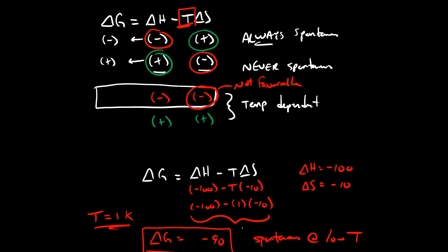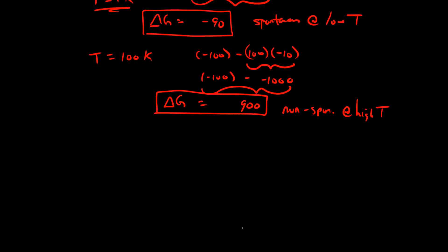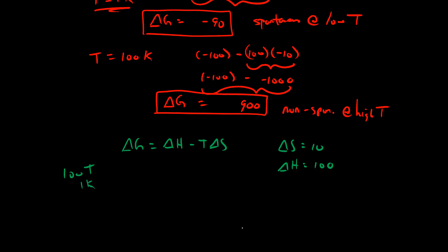Now let's make both values positive: delta G equals delta H minus T delta S, with delta S equal to 10 and delta H equal to 100. Starting at low temperature — T equals 1 Kelvin — we have 100 minus 1 times 10, giving us delta G equals 90. This is non-spontaneous at low temperatures.